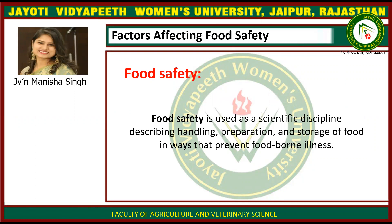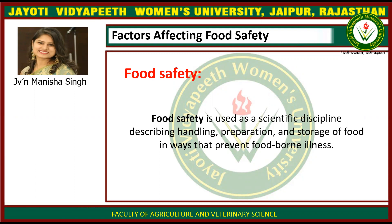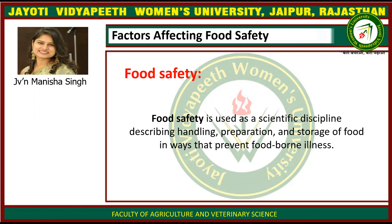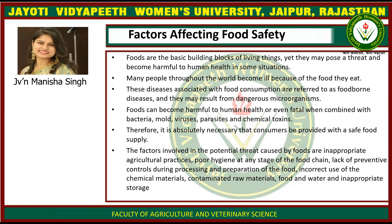For factors affecting food safety, we first need to know what food safety is. Food safety is a scientific discipline describing the handling, preparation, and storage of food in ways that prevent foodborne illness.